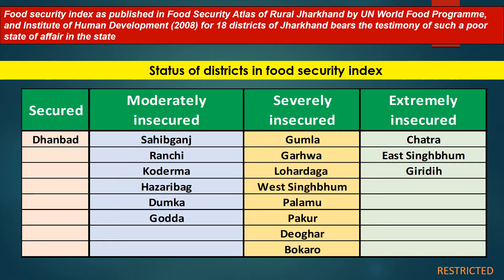The fourth category is 'Extremely Insecure', where the area is facing a lot of problems, extreme poverty, and lagging behind in supplying food materials. The quality is also very poor, and these parts are severely suffering from hunger and other issues. The districts falling in this category are Chatra, East Singhbhum, and Giridih.